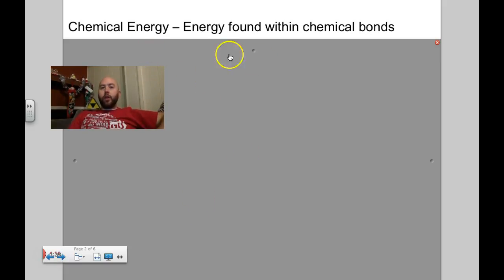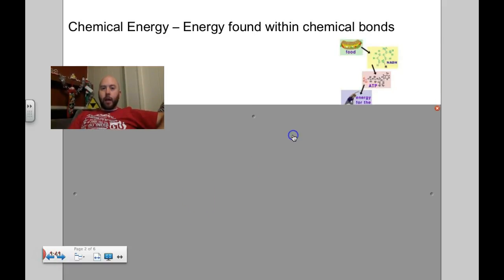Three more include chemical energy, which is the energy found in chemical bonds. We talked in the previous video about potential chemical energy. It's just the energy found in chemical bonds.